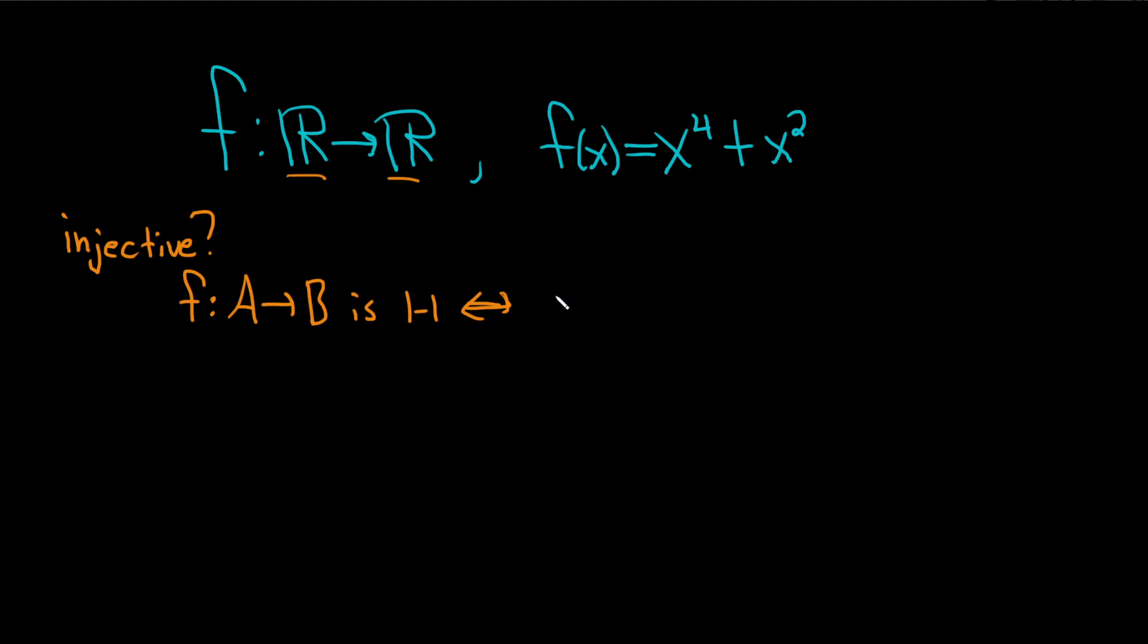This is the same thing as saying that for all a, b in A, whenever you have f of a equal to f of b, then we have a equal to b.